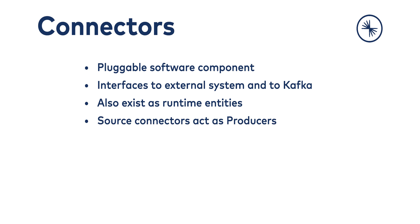Some key terms: a source connector reads data from an external system and produces it to a Kafka topic. A sink connector subscribes to one or more Kafka topics and writes those messages to an external system. Each connector is either a source or a sink, but it's worthwhile to remember that the Kafka cluster only sees a producer or a consumer in either case — that's all you can be to Kafka. If you're producing, you're a source connector; if you're consuming, you're a sink connector.